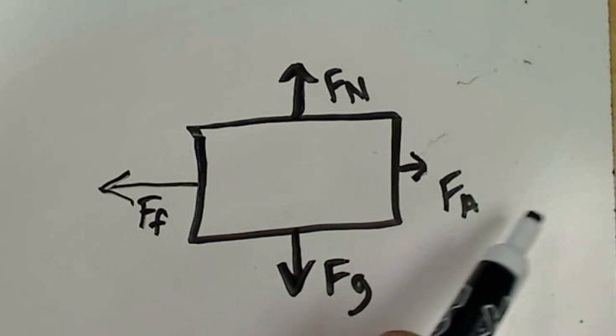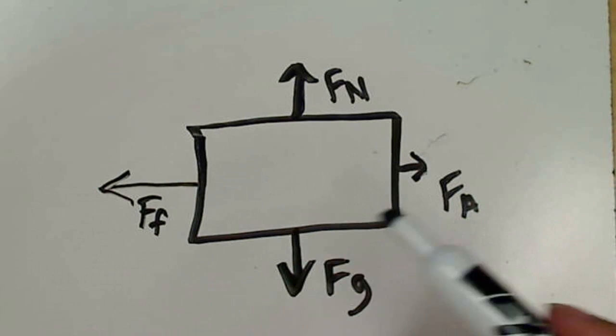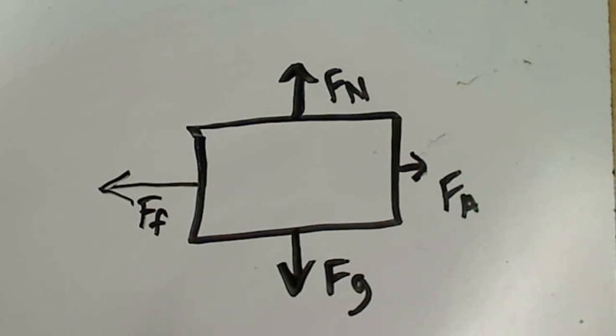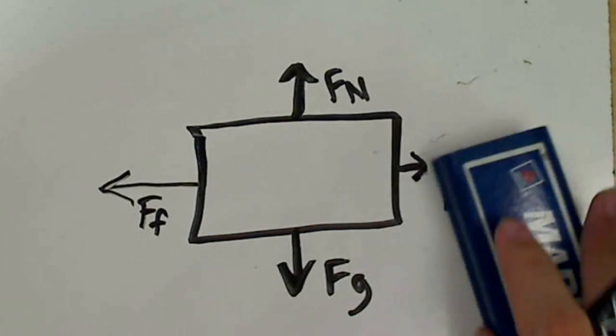The forces only tell us what our accelerations are — they do not tell us what our velocities are. Just because there's a force in one direction doesn't mean we're going that way. Our car is moving to the right, but our friction is pulling us to the left.